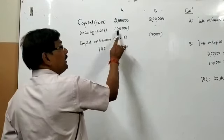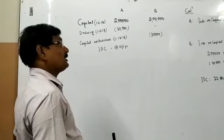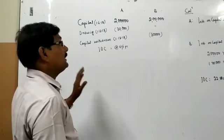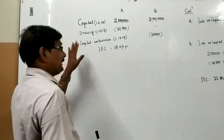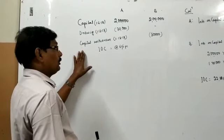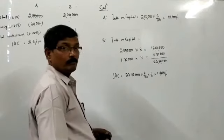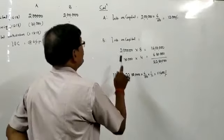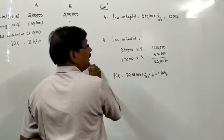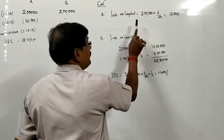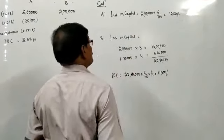So A made a drawing and B withdrew capital. Now let us see the impact on interest on capital calculation. For A, since he made a drawing, it will not affect the capital directly. So interest on capital will be calculated on 2,00,000 rupees at 6%, which comes to 12,000 rupees.